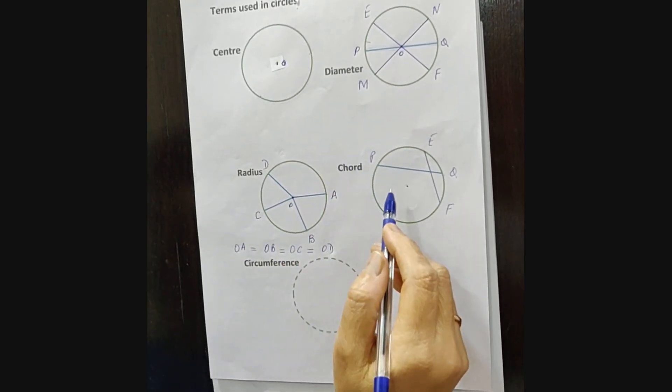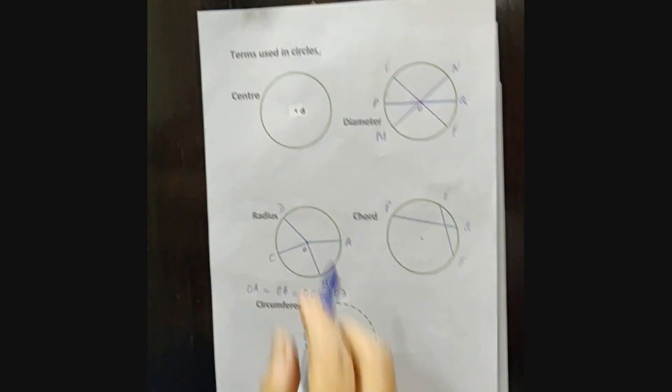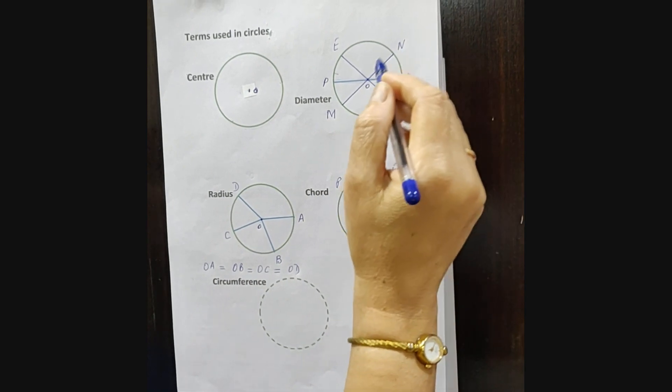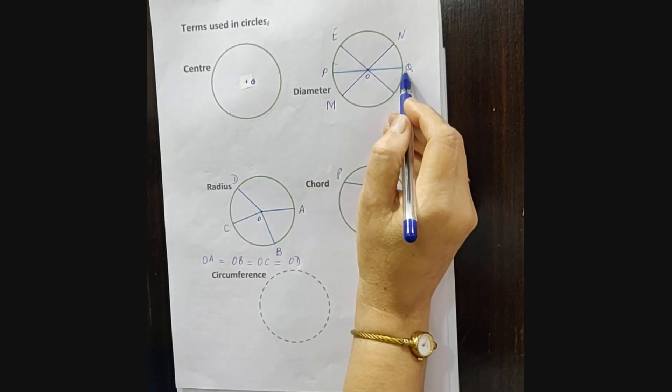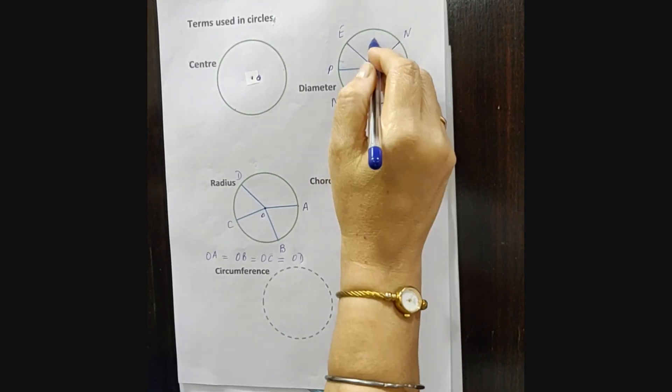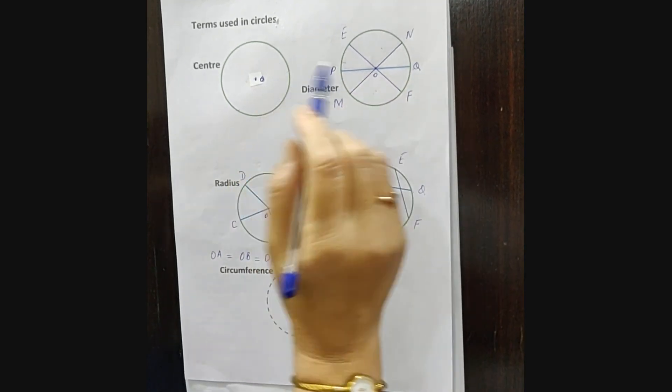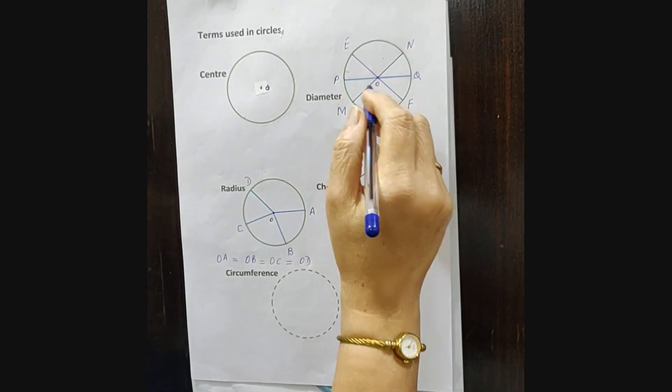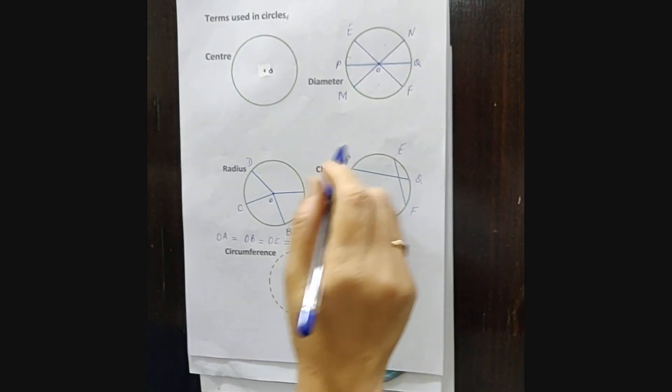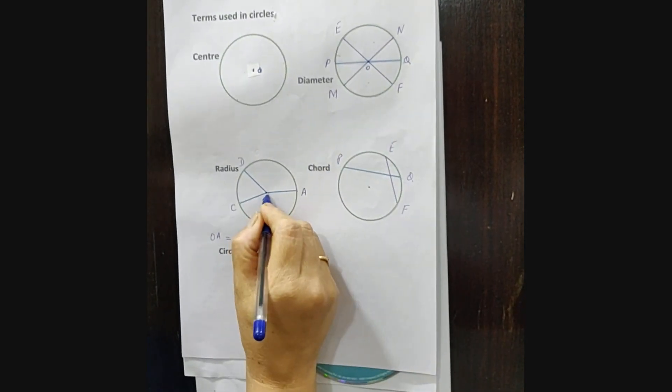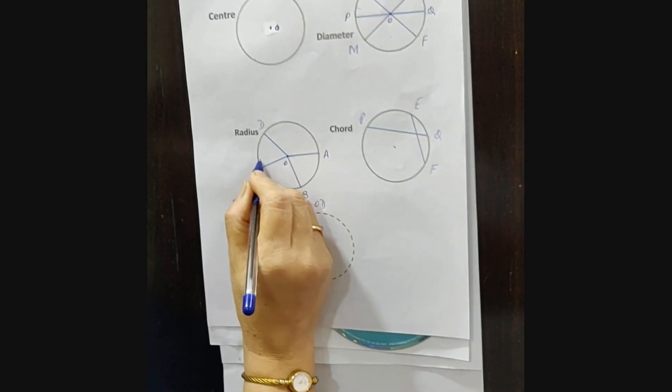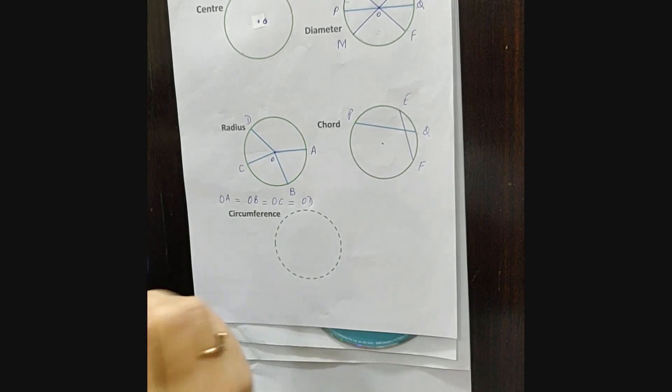All chords cannot be a diameter. Diameter is the longest chord and it divides a circle into two equal parts. Each part is called semi-circle. Diameter is twice the radius. When we draw a full line here, it becomes diameter.